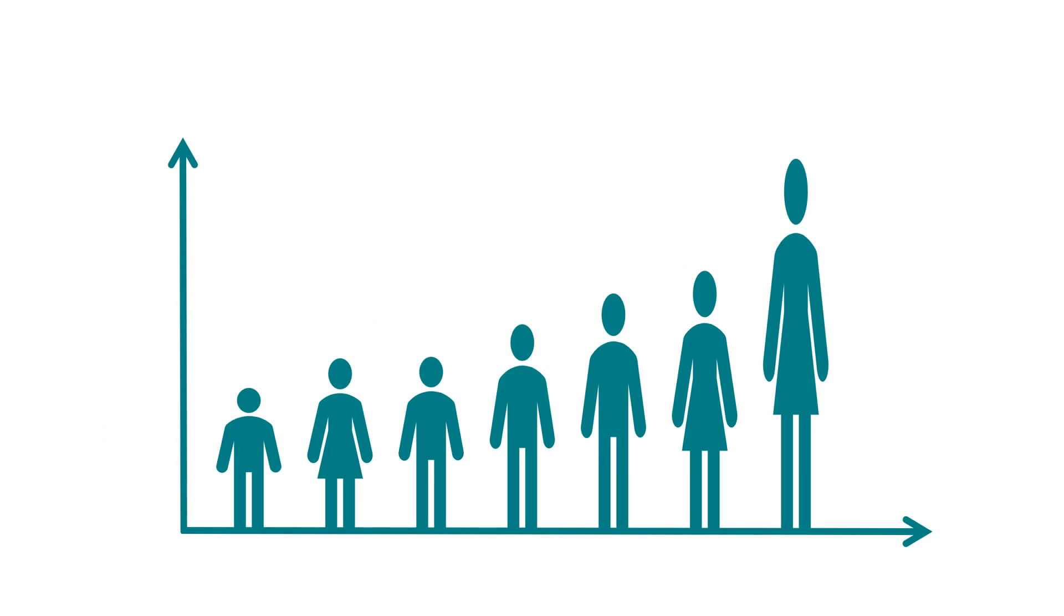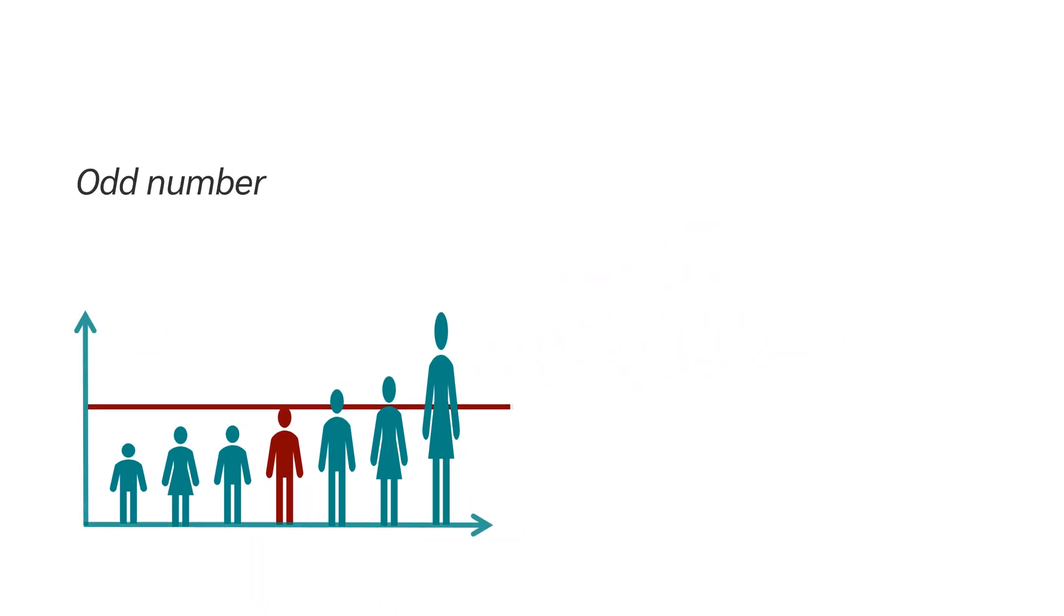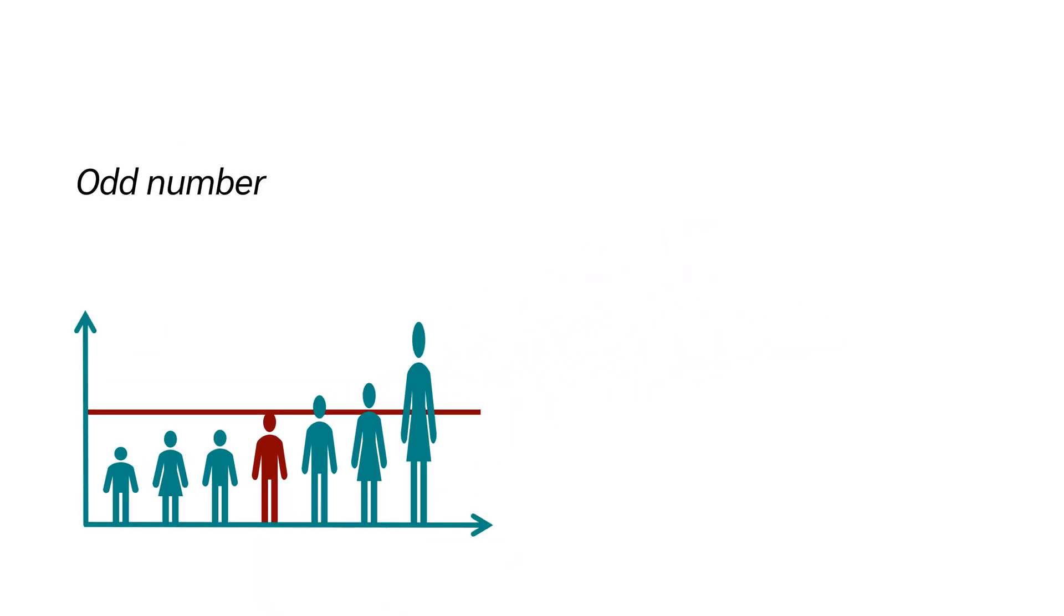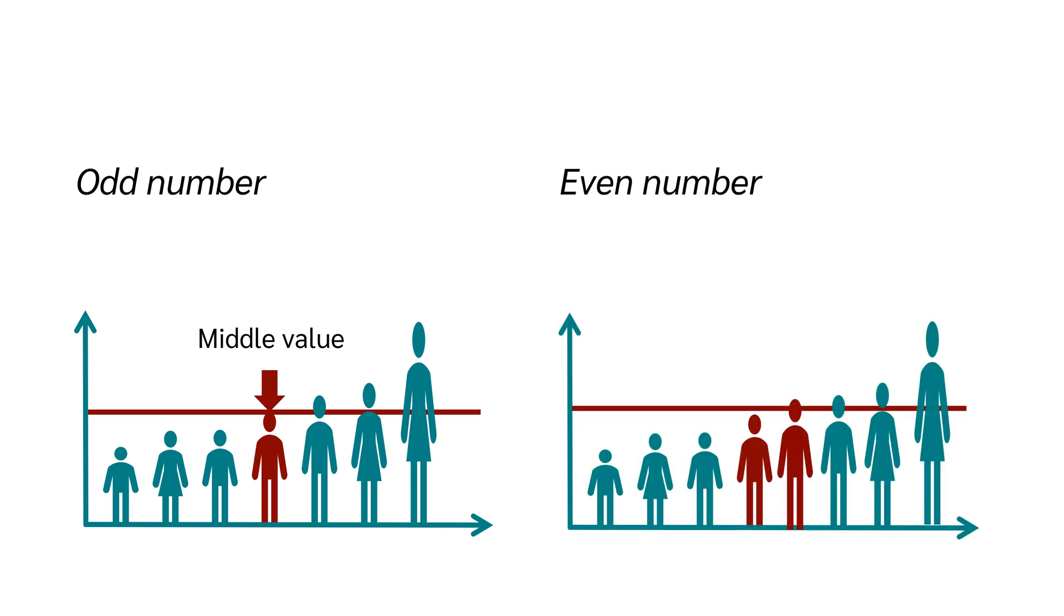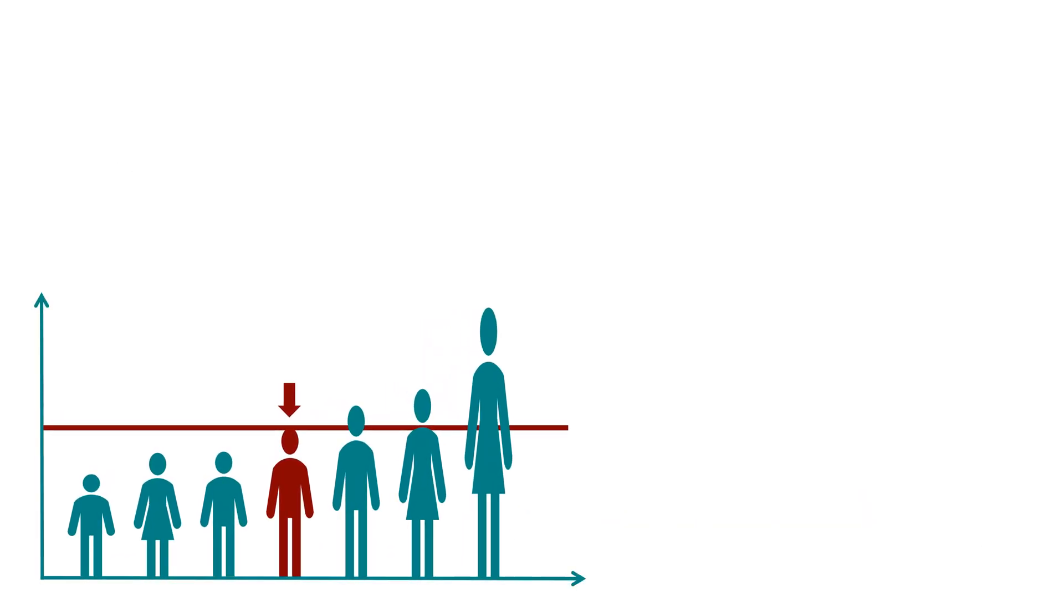When the values in a data set are arranged in ascending order, the median is the middle value. If there is an odd number of data points, the median is simply the middle value. If there is an even number of data points, the median is the average of the two middle values. It is important to note that the median is resistant to extreme values or outliers.